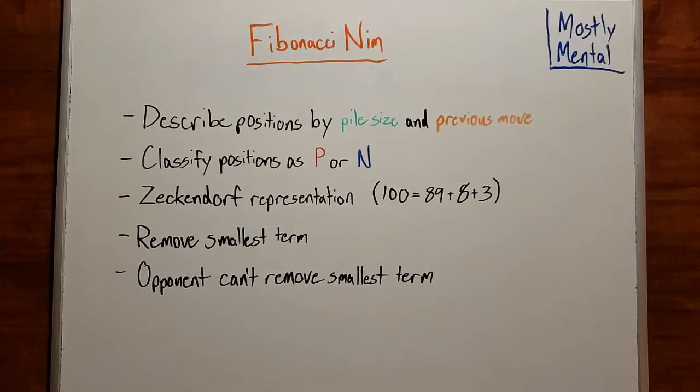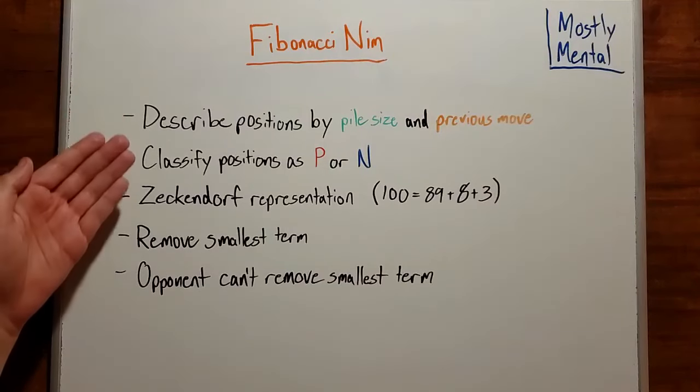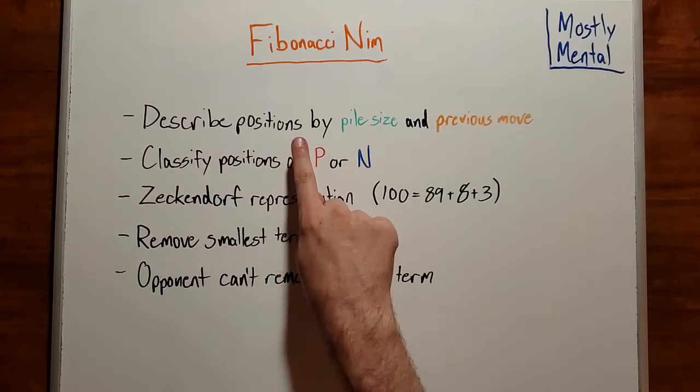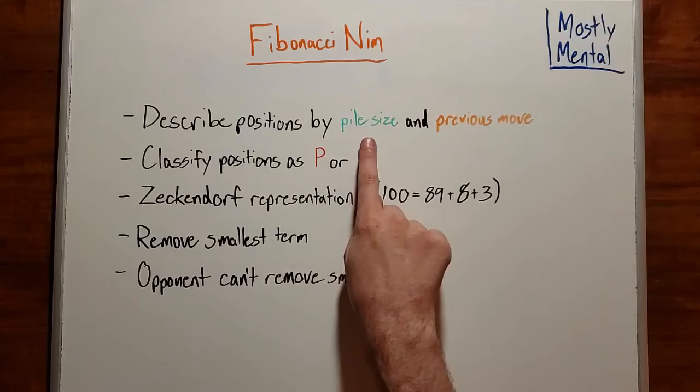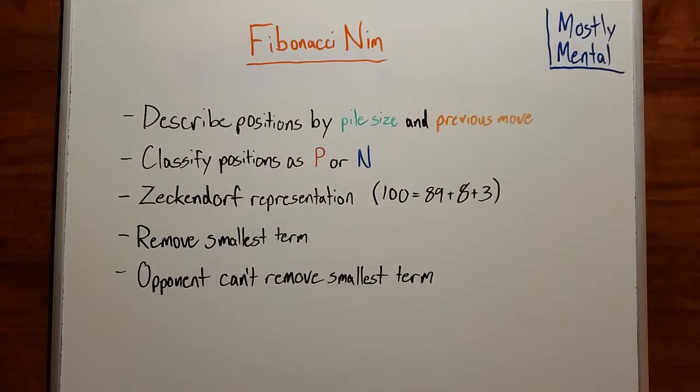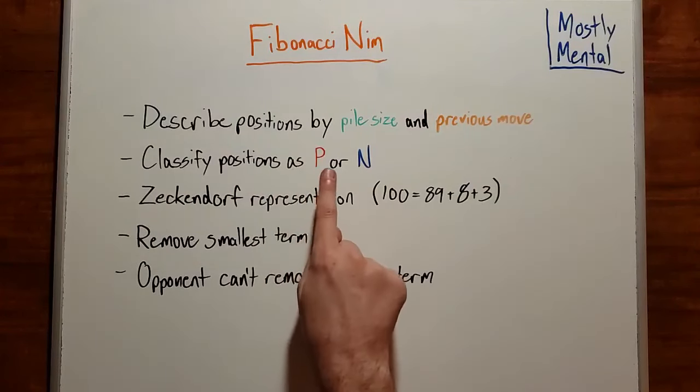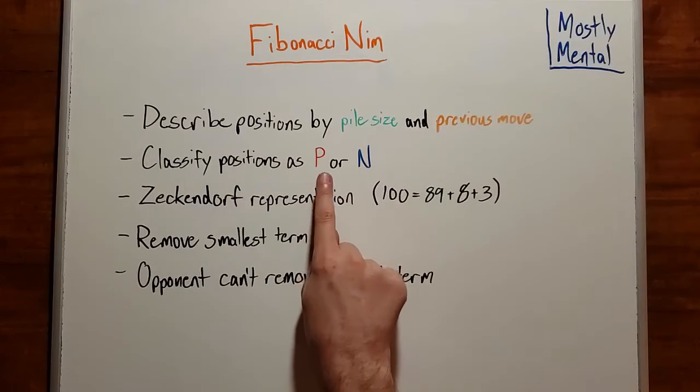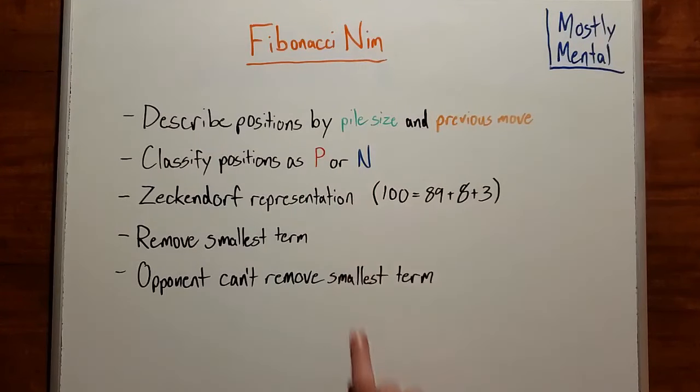That was all a lot of information, so let's take a moment to recap what we've seen. First, we described positions in our game in terms of the size of the pile and the previous move, and we classified those positions as either P or N positions. That is, whether the previous player to move or the next player could guarantee the win.